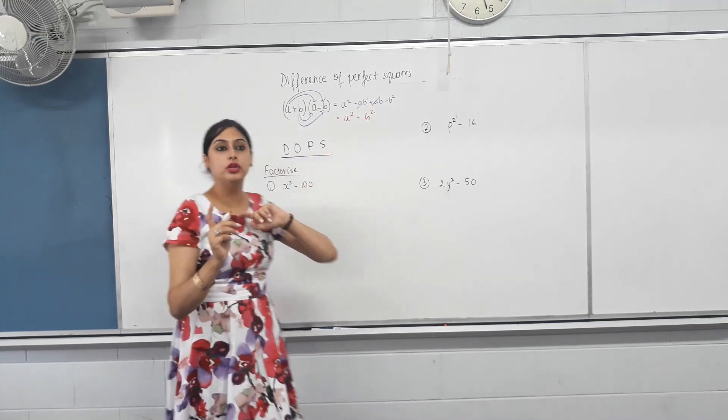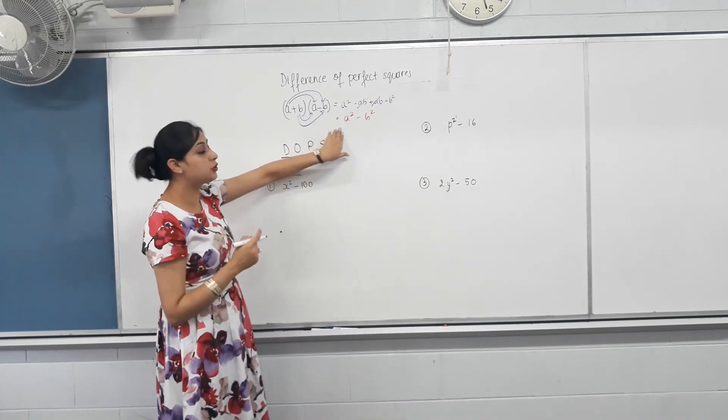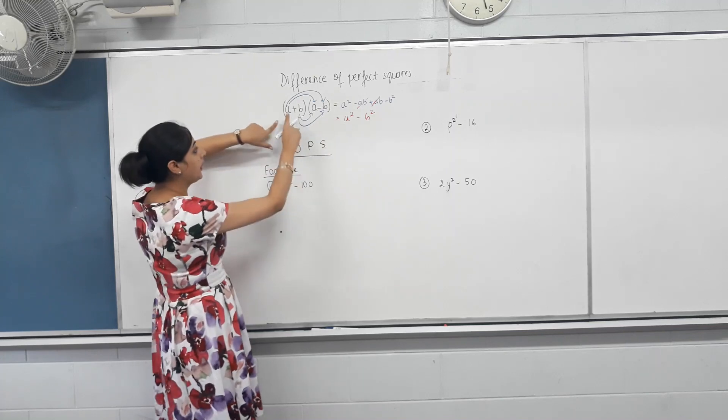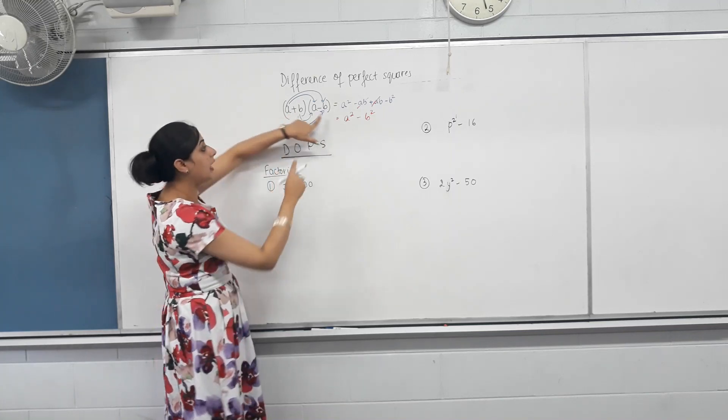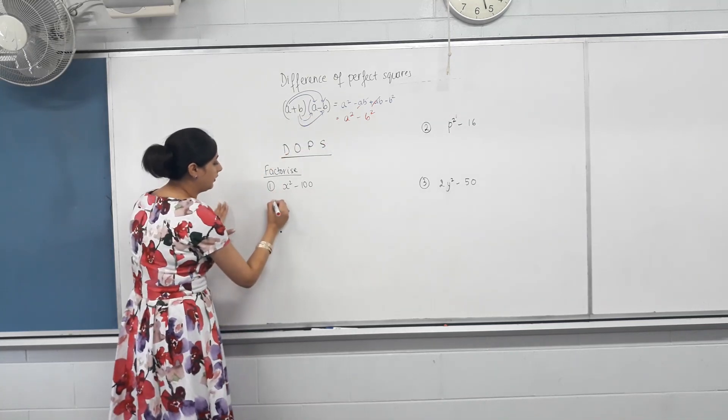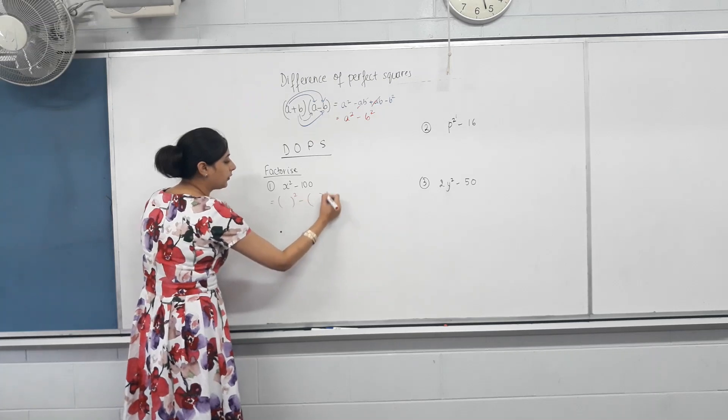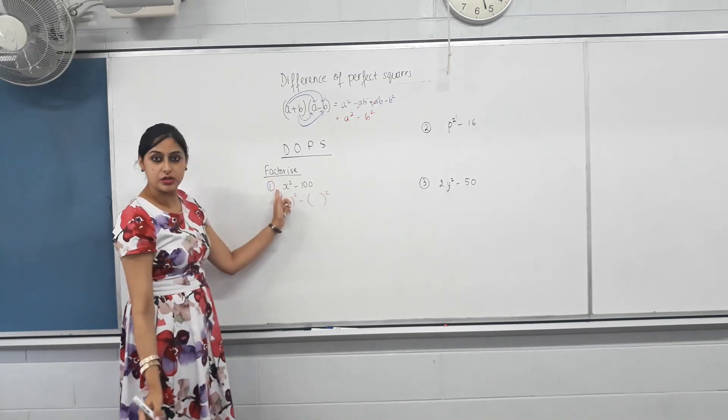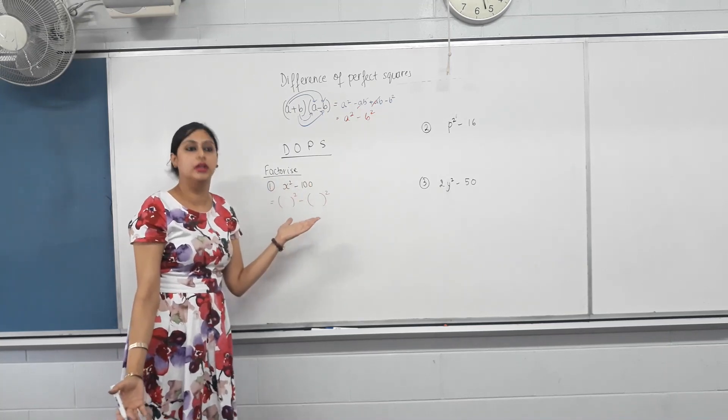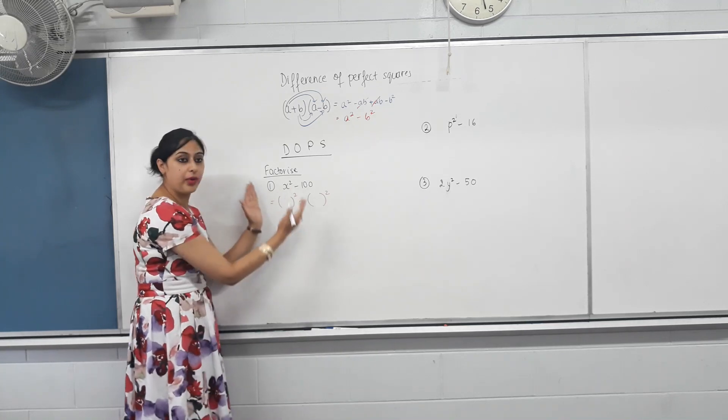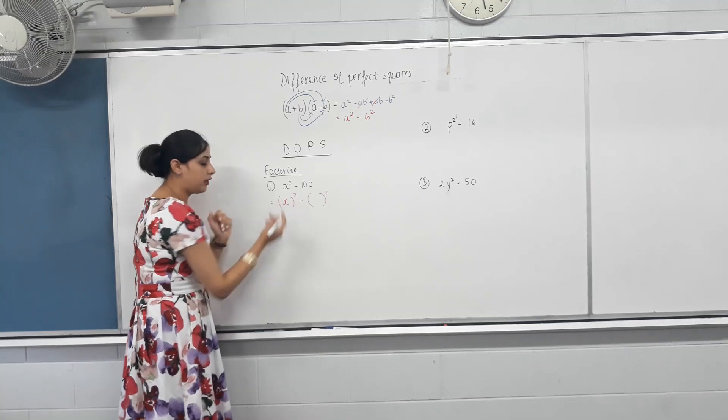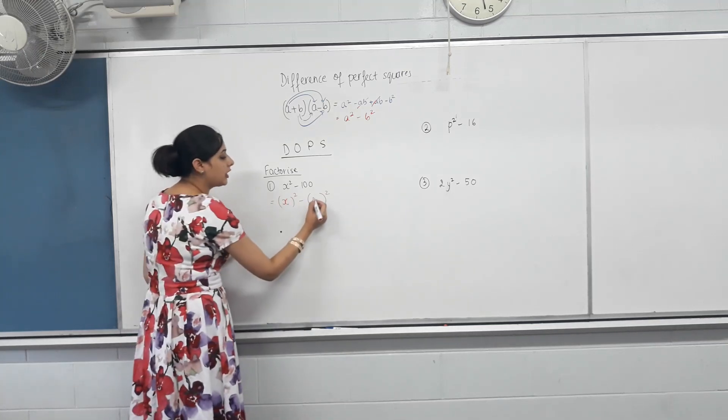So, now we know the shortcut of factorizing two perfect squares with a minus sign is put the same two numbers, not A squared but square root of A squared. Write the numbers added up in one bracket and minus subtracted in one bracket. Does that make sense? So, I'm going to try that here. First of all, you need to identify. Okay. I've got something squared. 100 is a perfect square and I've got a minus sign in between. Is it a DOPS question? Yes. Yes. So, you need to write it in bracket something squared minus bracket something squared. So, X squared can be written as square of X? Yes. What can 100 be written as? What's the square root? 10.